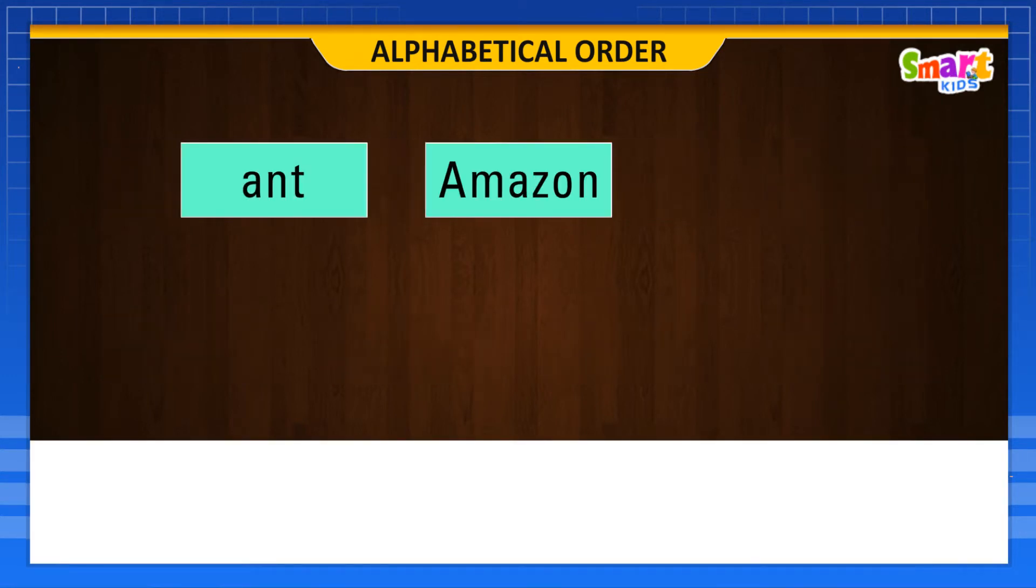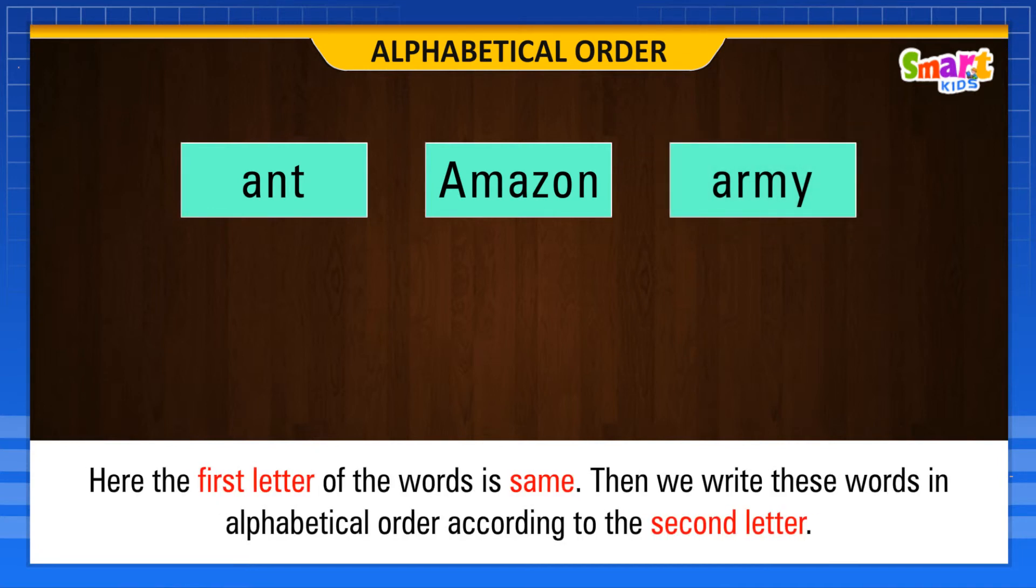Now, look at these words: Ant, Amazon, Army. Here, the first letter of the words is same. Then, we write these words in alphabetical order according to the second letter.